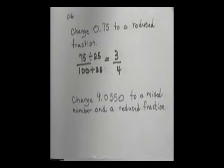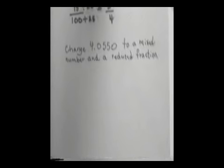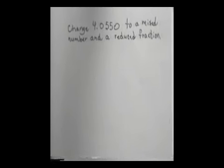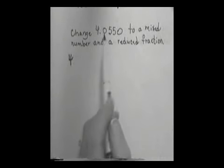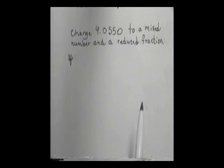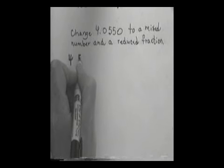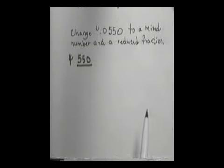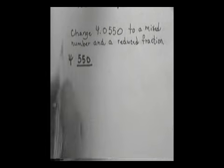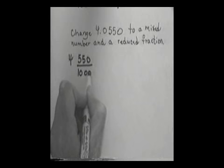Let's look at another one. Let's change 4.0550 to a mixed number and a reduced fraction. Okay, this one does have a whole number, so I would write down the 4. That's my whole number. And then when I go to the decimal part, I look and see what number I saw there, and I see 550. And because I have 4 decimal places, I'm going to have ten-thousandths, or you could say this last zero is in the ten-thousandths place. So I would write down ten-thousandths.